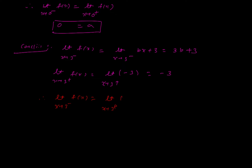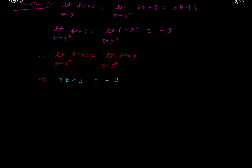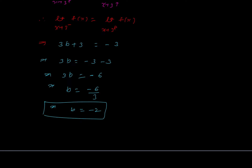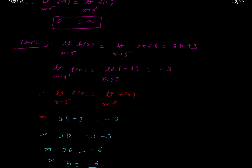Therefore, limit x tends to 3 minus of f(x) equals limit x tends to 3 plus of f(x). This implies 3b + 3 = minus 3. So 3b = minus 6, which implies b = minus 6 divided by 3, that is b = minus 2. This is the A and B value.